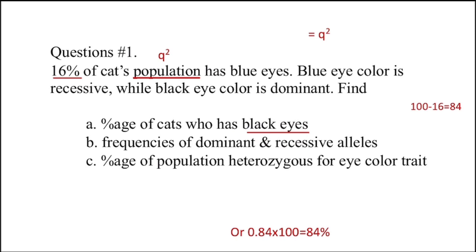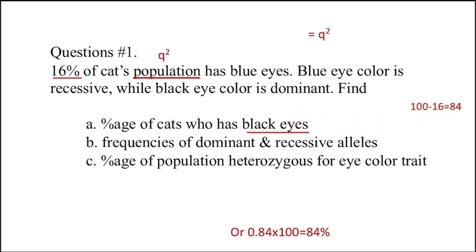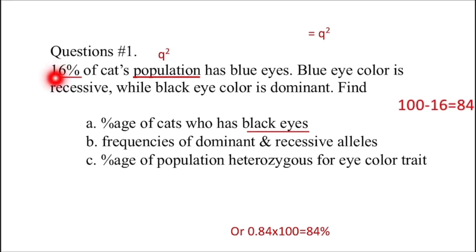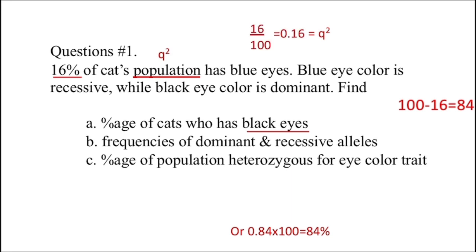Apart from the homozygous recessive individuals, the rest of the population has the dominant trait. By subtracting the percentage of recessive homozygous from the total percentage, we get the percentage of individuals with the dominant trait: 100 − 16 = 84. So 84% of cats have black eyes. From this data we can also calculate the frequency of the recessive genotype Q²: 16/100 = 0.16. So the frequency of the homozygous recessive genotype is 0.16.